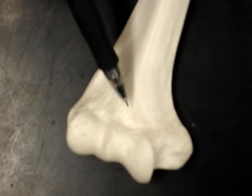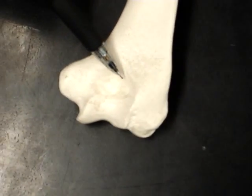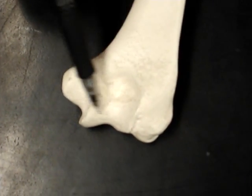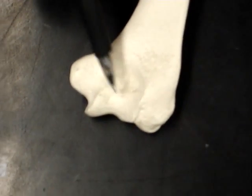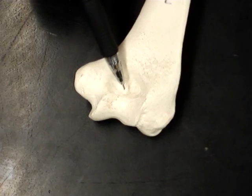And then we turn this posteriorly. We have the olecranon fossa. And then this is the posterior view of the trochlea. So olecranon fossa of the trochlea. And then we come back to the top.